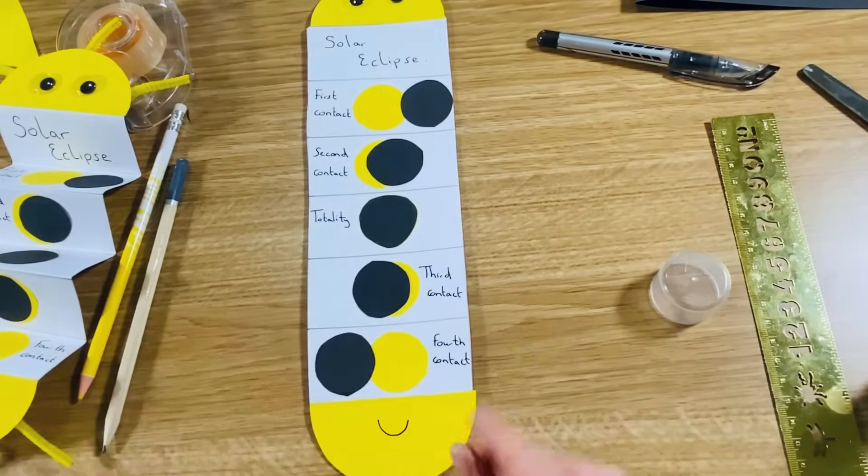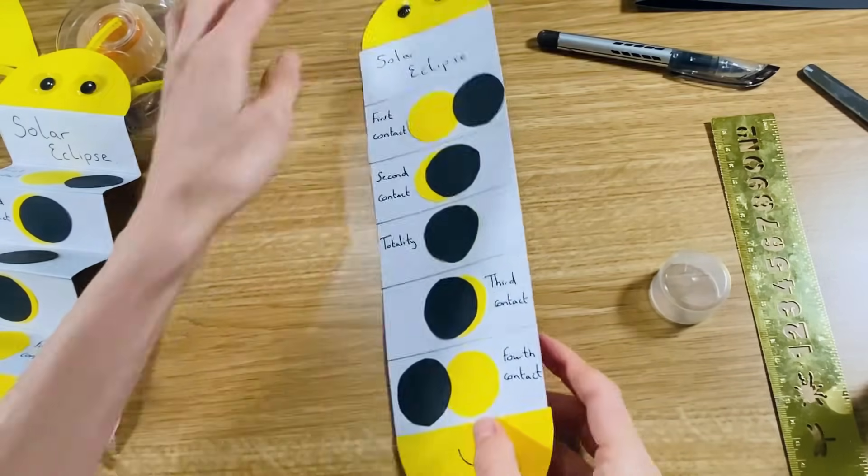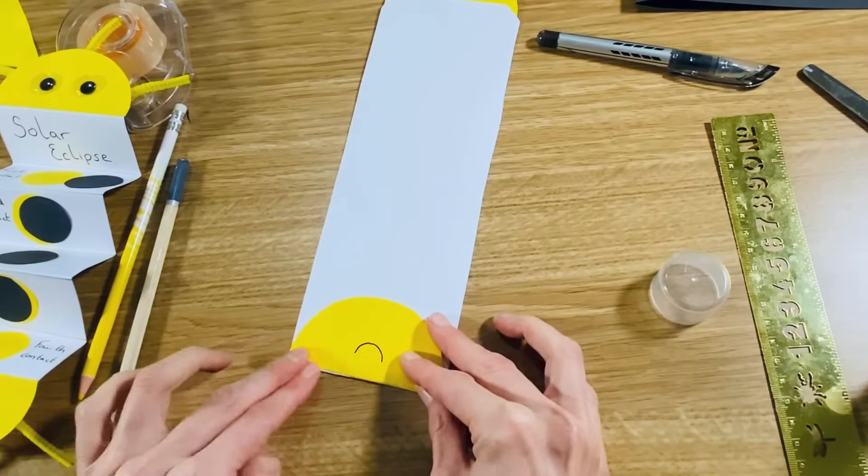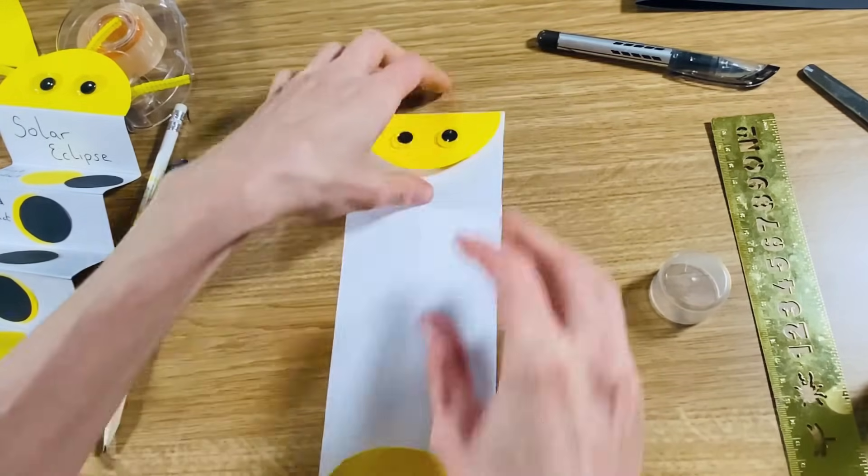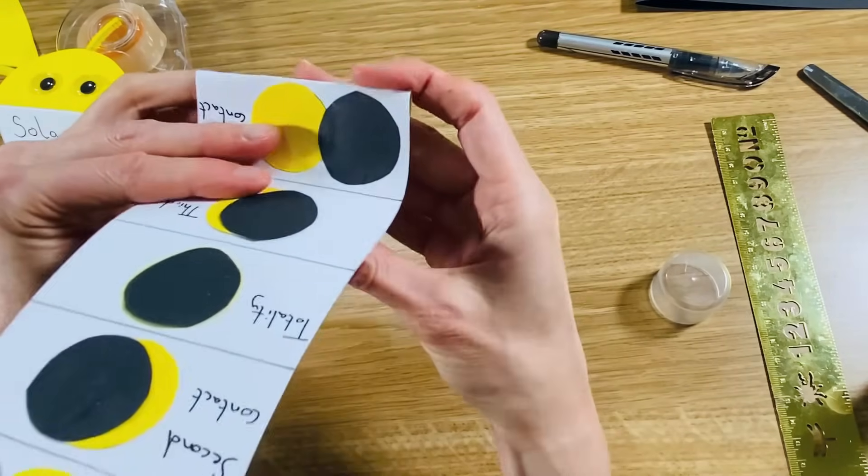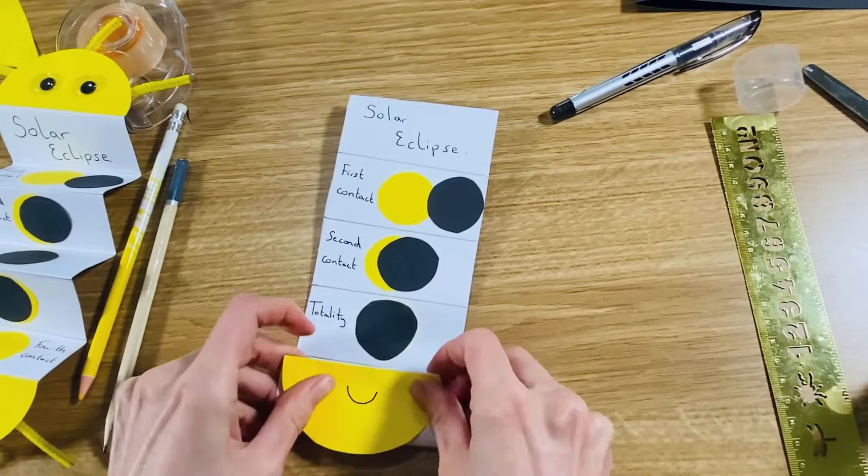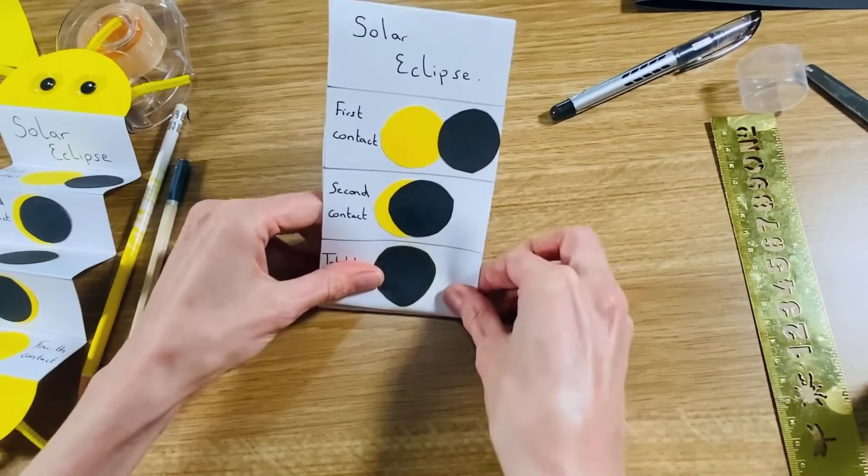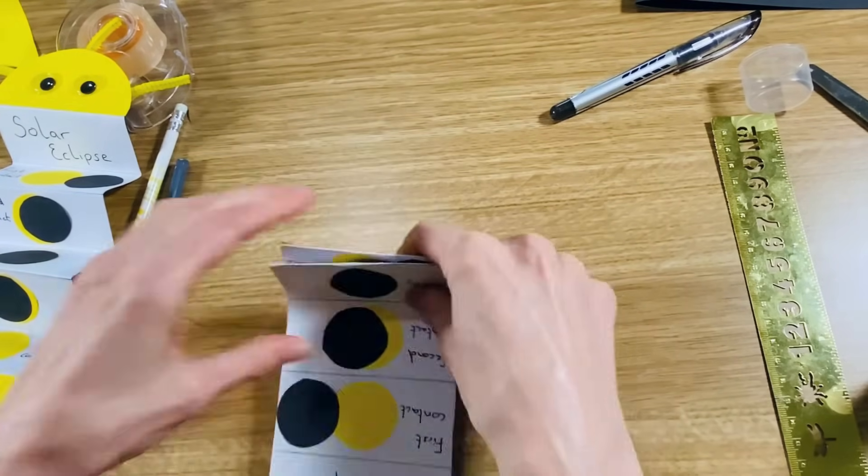Once your glue is dry, then it's time to fold. And there's different ways you can do this, but I usually start with the top and the bottom, and I just fold those sun halves back. And then you're just going to need to fold the middle section like a concertina along those lines that you drew with the pencil, just pressing them down, particularly if you're using card to get a good shape. So just folding backwards and forwards.